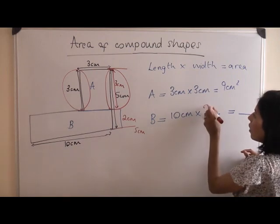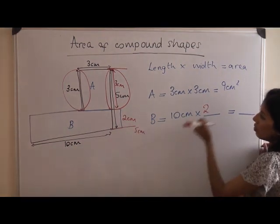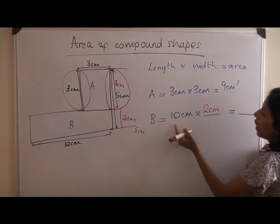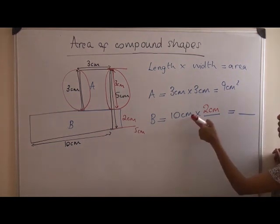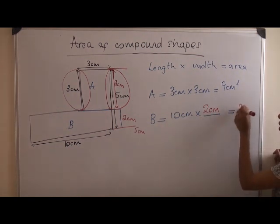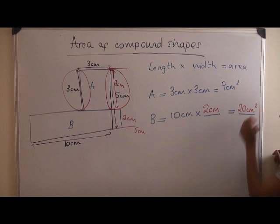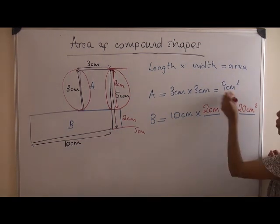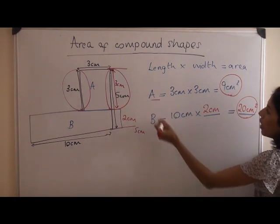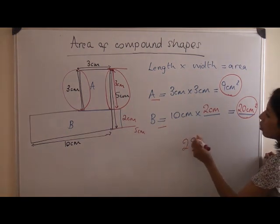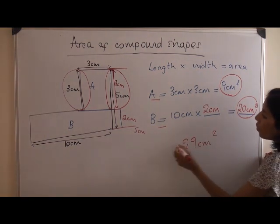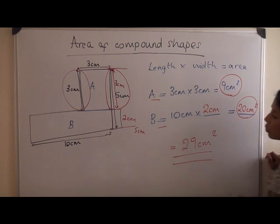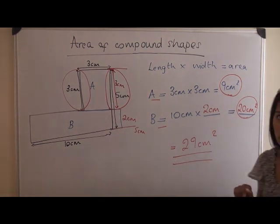So now we have our missing width. Now you can finish off your calculation. 10 centimetres by 2 centimetres is 20 centimetres squared. So if you take the two areas of shape A and B, the total area for this compound shape equals 29 centimetres squared.